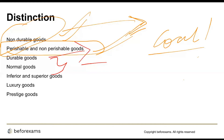Normal goods are goods whose demand increases when income increases and demand decreases when income decreases. The price here remains the same — it is income that drives demand changes.